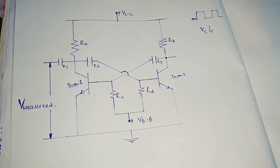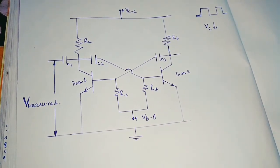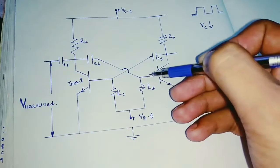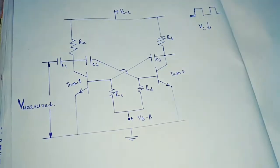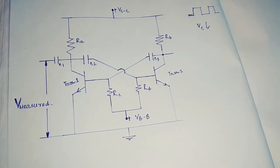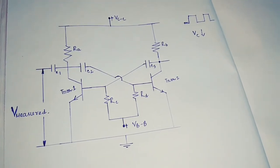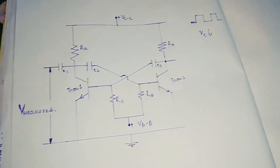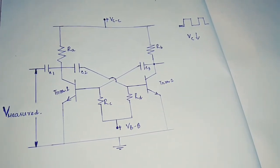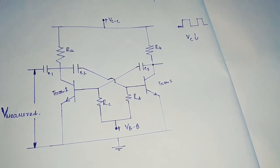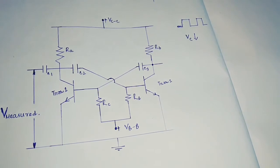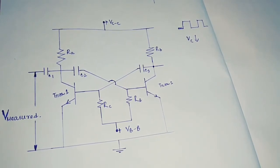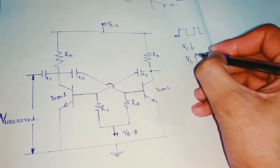As soon as transistor one's collector voltage decreases, that collector voltage directly goes through this path to the base of transistor two. As soon as this very reduced collector voltage — which we can assume is zero — is given to the base of transistor two, transistor two will definitely go to cutoff region and will not conduct. As soon as transistor two goes to cutoff region, its collector voltage will suddenly increase.